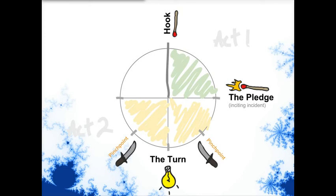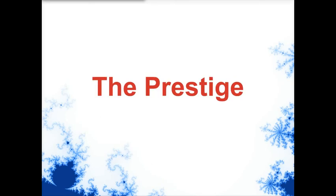Act two is also when the try-fail cycles happen. This is when the hero attempts to change things and fails, attempts again, fails, attempts again, and partially succeeds through this cycle.